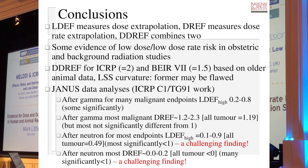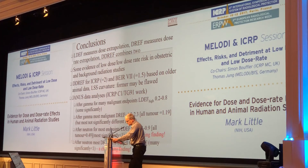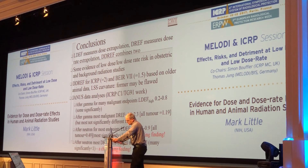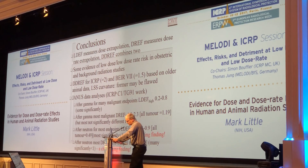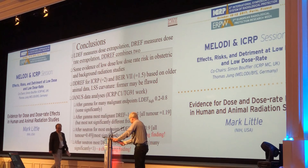To conclude: we've introduced the measures of LDEF, the low dose extrapolation factor, and DREF, the dose rate extrapolation factor, and seen that DDREF essentially combines these two into one. There's some evidence of low dose and low dose rate risk in obstetric and background radiation studies. The current Janus data suggests that LDEF is probably less than one for many malignant endpoints, but the DREF could be greater than one and up to about two and a half. For neutrons, it looks like both are less than one — quite challenging findings that need replication, and replication is possible now.